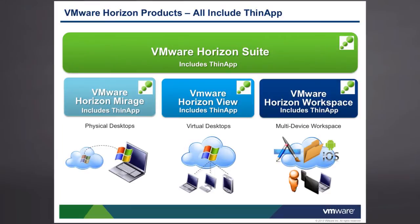ThinApp is part of the Horizon suite of products that make up end user computing. This is actually made up of three main products: VMware Horizon Mirage, VMware Horizon View, and VMware Horizon Workspace. Together they make the whole Horizon suite. With each product we can tie ThinApp in to help us virtualize our applications within various desktops, both physical and virtual, as well as tie it in with the Horizon Workspace environment to allow users access to their applications from anywhere in the world.